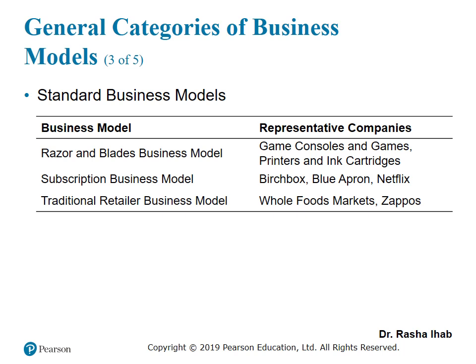Finally, the traditional retailer business model. Here the firm sells products or services made by others and gets back a markup. For example, Amazon — they use their online store to offer you products sold by other people. So this is the traditional retail business model. These are some examples of the standard business model. Most of your projects are going to fit in one of the standard business models.